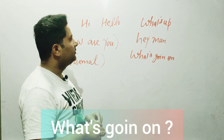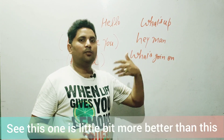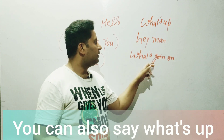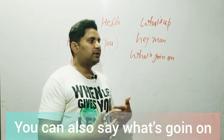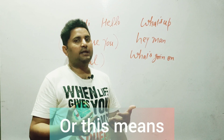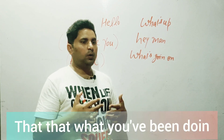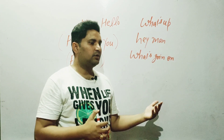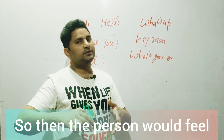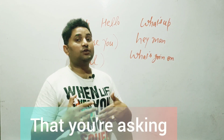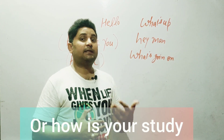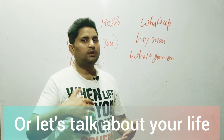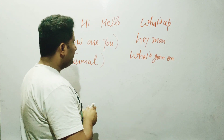The next one is 'what's going on.' This is a little bit better. 'What's going on' means 'what have you been doing?' For example, if somebody is studying and you say 'what's going on,' the person would feel you're asking how their study is going, or let's talk about your life and what you've been doing.